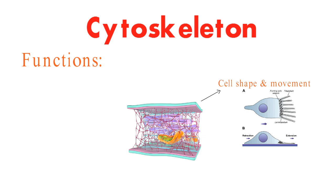The cytoskeleton is essential for cell division. During cell division, the cytoskeleton helps to separate the chromosomes and to build the new cell walls.